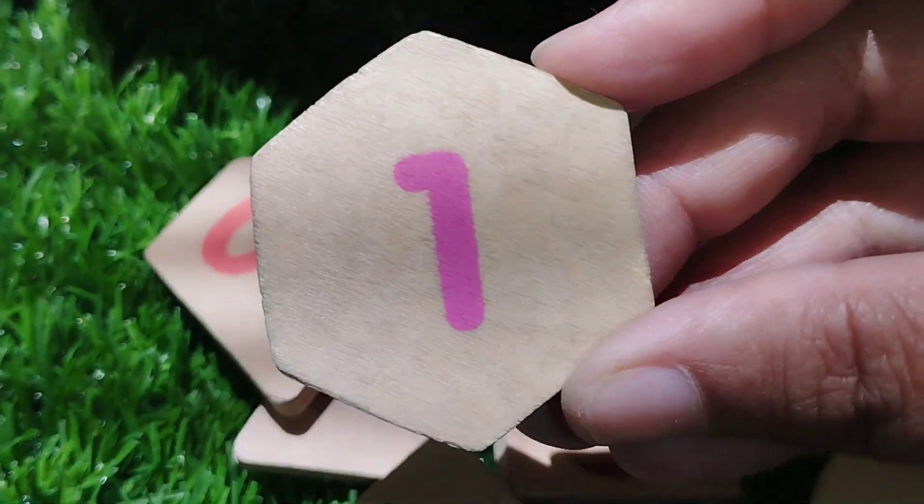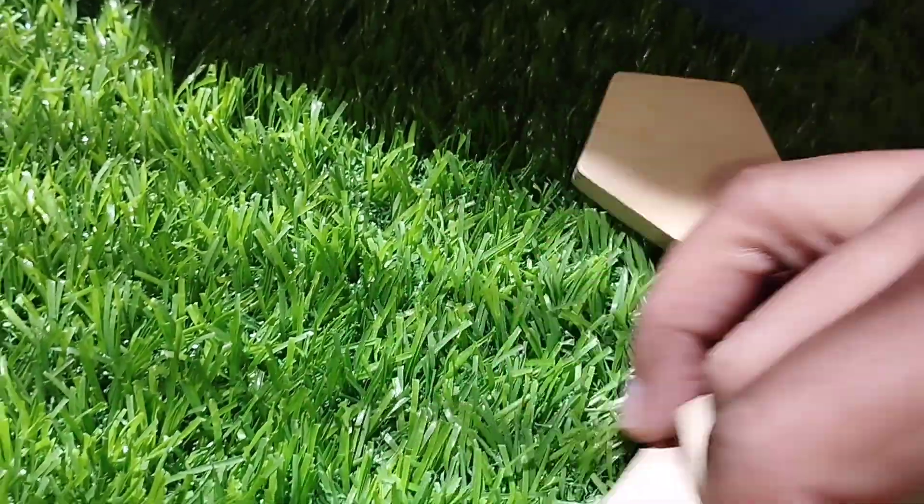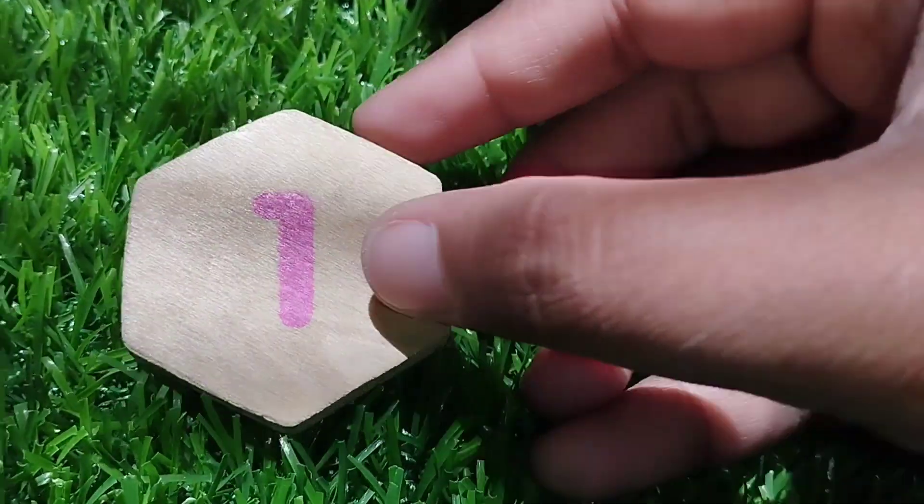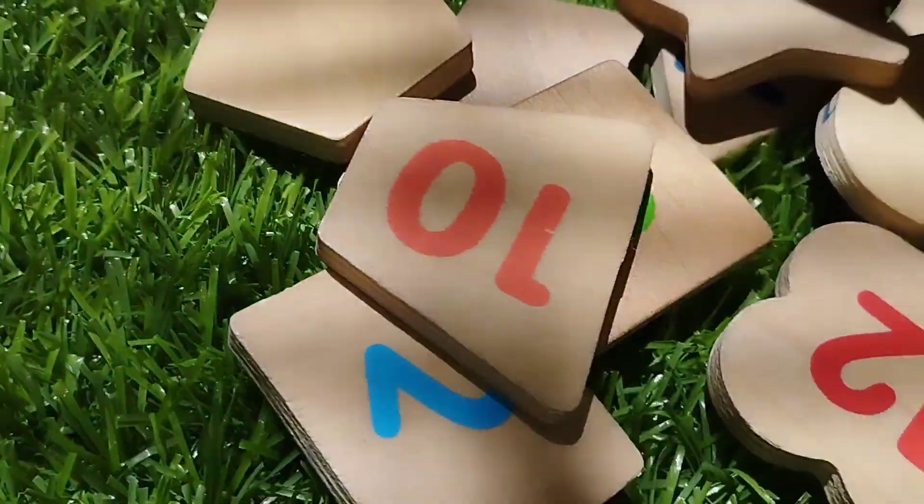Let's try it. The first shape is hexagon. The number is one. This is a hexagon shape.